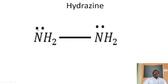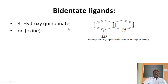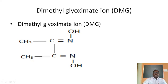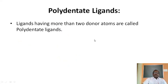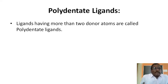Hydrazine (NH2-NH2) has two nitrogen donor atoms that donate lone pairs of electrons — a bidentate ligand. 8-hydroxyquinoline, usually called oxine, coordinates through nitrogen and oxygen, making it a bidentate ligand. Dimethylglyoximate ion (DMG) coordinates through nitrogen and O⁻, donating lone pairs — again a bidentate ligand. In summary, any ligand that donates lone pairs through 2 donor atoms is a bidentate ligand, as opposed to monodentate ligands which have only one donor atom.